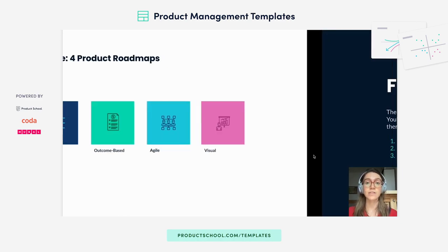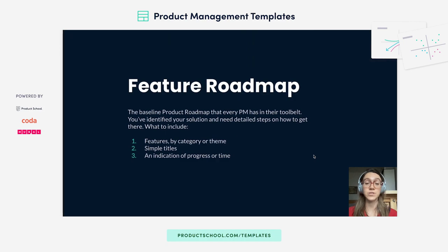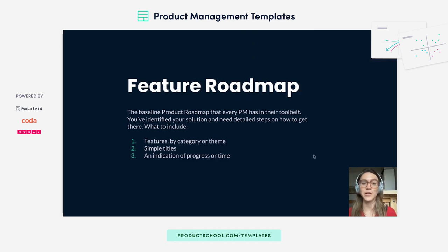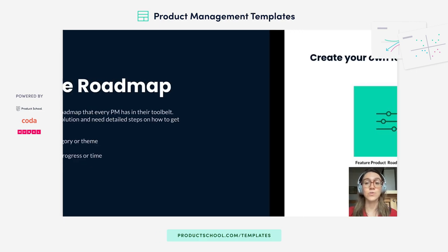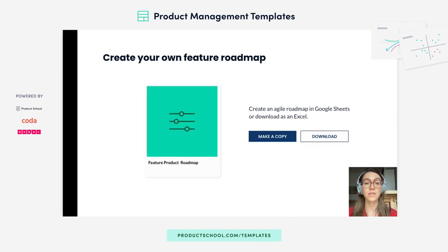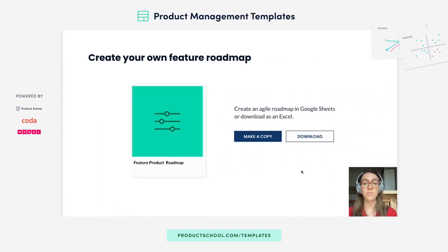Starting with the feature roadmap — this is kind of your basic starter pack product management roadmap. You start with the features that you need to build and expand that out into a timeline.